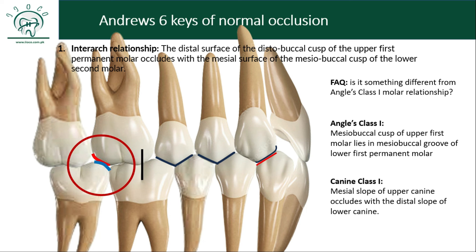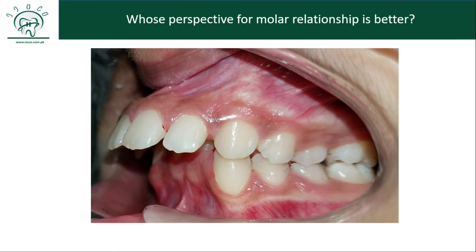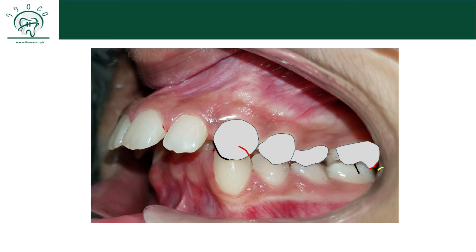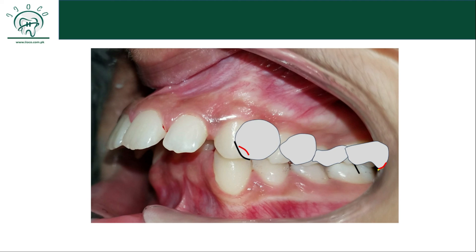Sometimes you come across cases where you feel the molar is in a Class I relationship according to Engel's classification. In this picture you can see that the mesobuccal cusp is more or less in the buccal groove of the lower first molar. But according to Andrews' criteria, the molar intercuspation is a little bit disturbed, and that is why the teeth anterior to the molar are also not fitting properly in occlusion. Therefore, Andrews' first key guides you better in terms of diagnosis. If you move the upper molar distally to fulfill Andrews' criteria, the whole occlusion including the canine relationship will get much better.